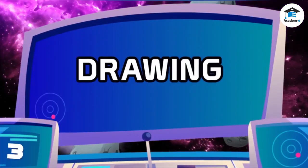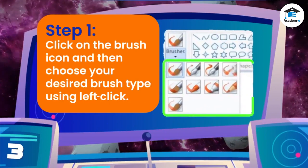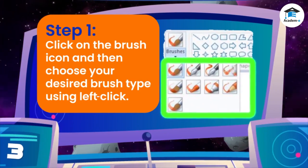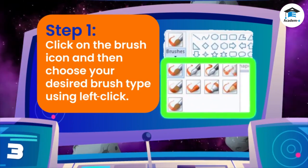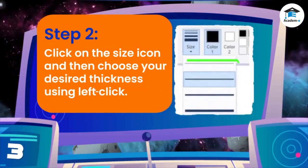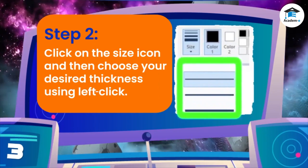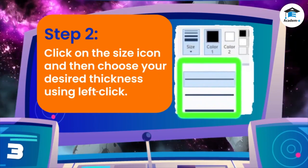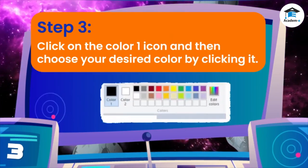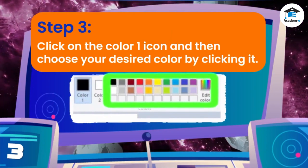Draw. Step 1: Click on the brush icon and then choose your desired brush type using left click. Step 2: Click on the size icon and then choose your desired thickness using left click. Step 3: Click on the Color 1 icon and then choose your desired color by clicking it.